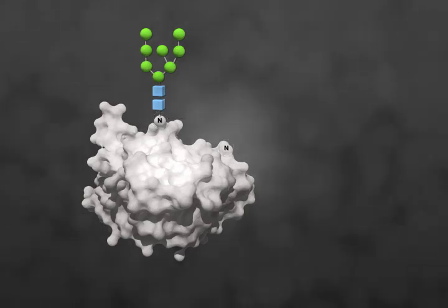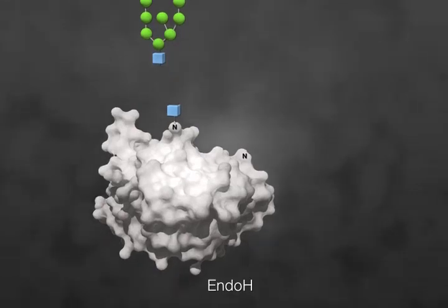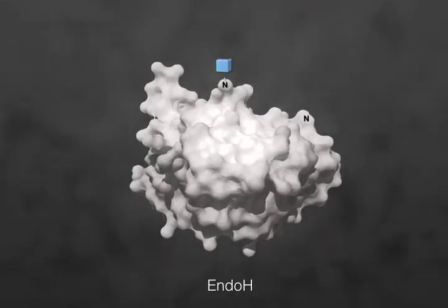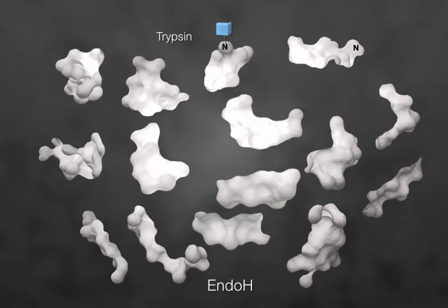Using glycosidases like Endo H that cleave between the two GlcNAc residues can help to determine occupancy in glycoproteins. Trypsin is used to digest the protein. The peptides are analyzed by mass spectrometry.